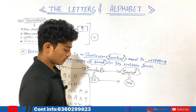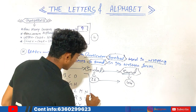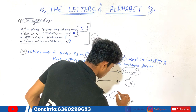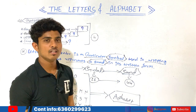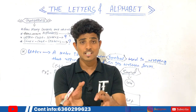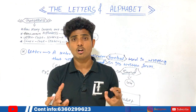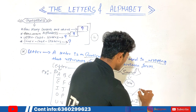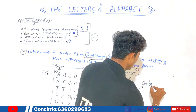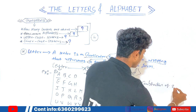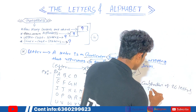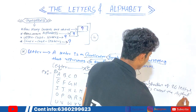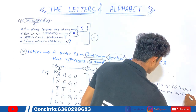These 26 letters collectively are called the alphabet. So how many alphabets do we have in the English language? English has 26 letters, and those 26 letters collectively are called the alphabet, which means we have only one alphabet. The definition of alphabet would be: the combination of 26 letters is called the alphabet.